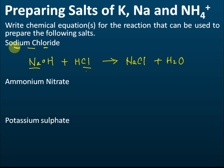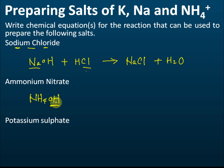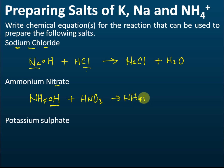For ammonium nitrate, the alkali must contain ammonium, so we use ammonium hydroxide. To get nitrate, we use nitric acid. The reaction produces ammonium nitrate and water, and the equation is already balanced: NH₄OH + HNO₃ → NH₄NO₃ + H₂O. For potassium sulfate, the alkali is potassium hydroxide, and since we need sulfate, we use sulfuric acid.